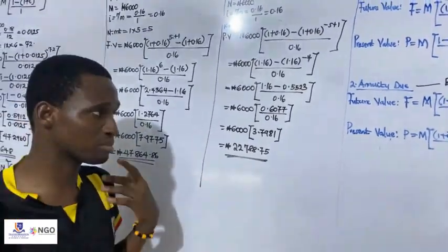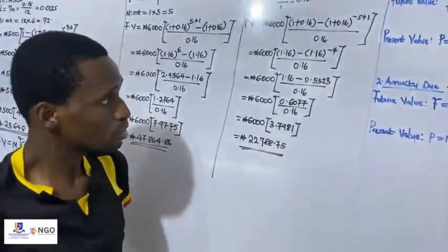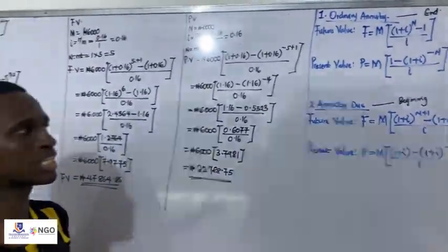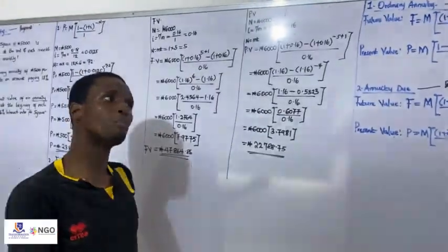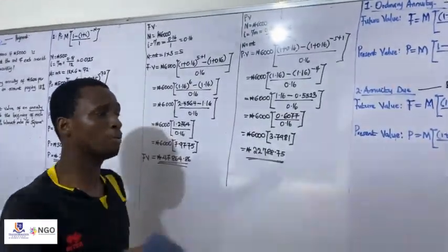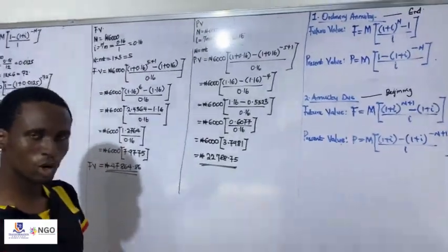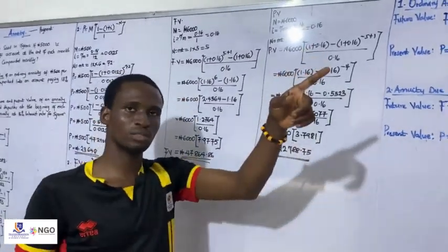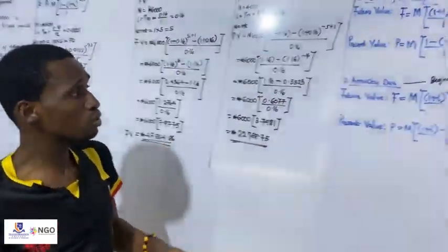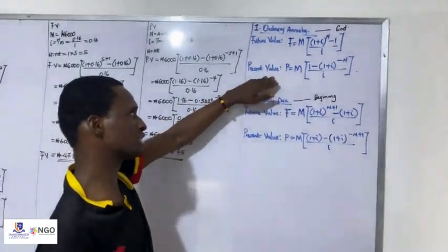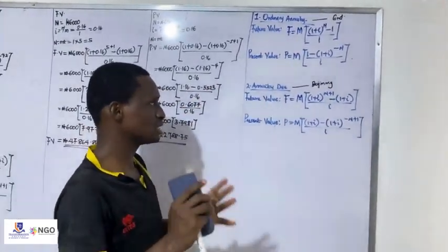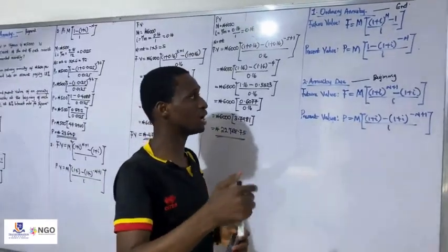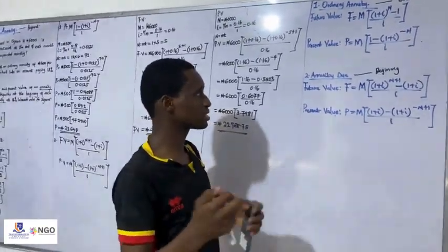Most times, questions can simply ask you to calculate the value of annuity due or ordinary annuity without indicating whether it is future value or present value. But as I said, when you read the question carefully, you will know which to use. The concept of future value and present value will be well explained when we are having our classes. Thank you.